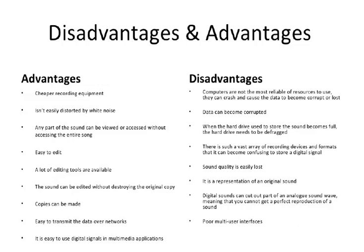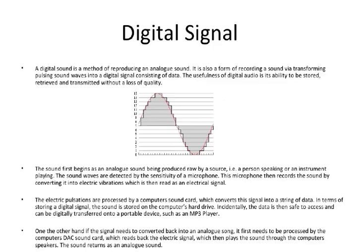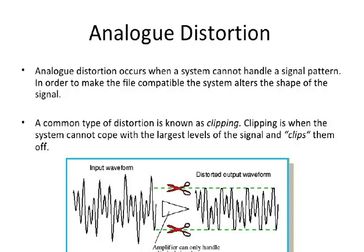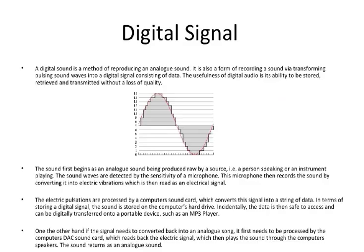Accuracy and precision are greater. Digital systems are much more accurate and precise than analog systems, because digital systems can be easily expanded to handle more digits by adding more switching circuits. Analog systems would be quite complex and costly for the same accuracy and precision.